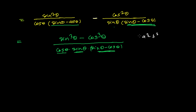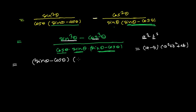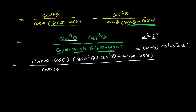This looks like A cubed minus B cubed. The formula is A minus B times (A squared plus B squared plus AB). I'm choosing this form so that the (sine theta minus cos theta) factor cancels with the denominator. Here A is sine theta and B is cos theta, so A cubed minus B cubed equals (sine theta minus cos theta) times (sine squared theta plus cos squared theta plus sine theta times cos theta), all divided by cos theta times sine theta times (sine theta minus cos theta).